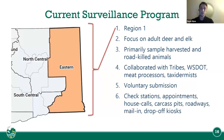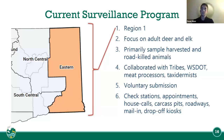We have check stations throughout the east side of the state, which operate during hunting seasons — the modern firearm season, early and late. We also do sampling by appointments, house calls, carcass pits at DOT pits, roadways, mail-in, and drop-off kiosks. The drop-off kiosks were created last year — basically a locked box with an opening at the top like a mailbox where people can submit their deer heads, which we then sample the next day after collecting.